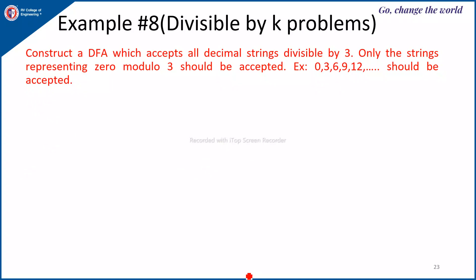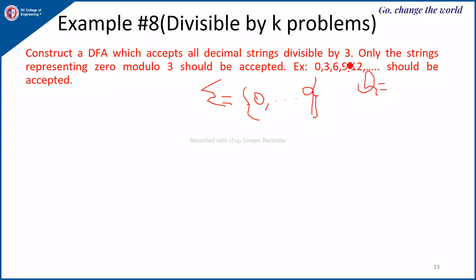Next, construct a DFA which accepts all decimal strings divisible by 3 — that is, only strings representing 0 modulo 3 should be accepted. Here sigma is all decimal digits from 0 to 9. The set of states Q depends on modulo K; since K is 3, the states are Q0, Q1, and Q2. Every state will have 10 transitions.